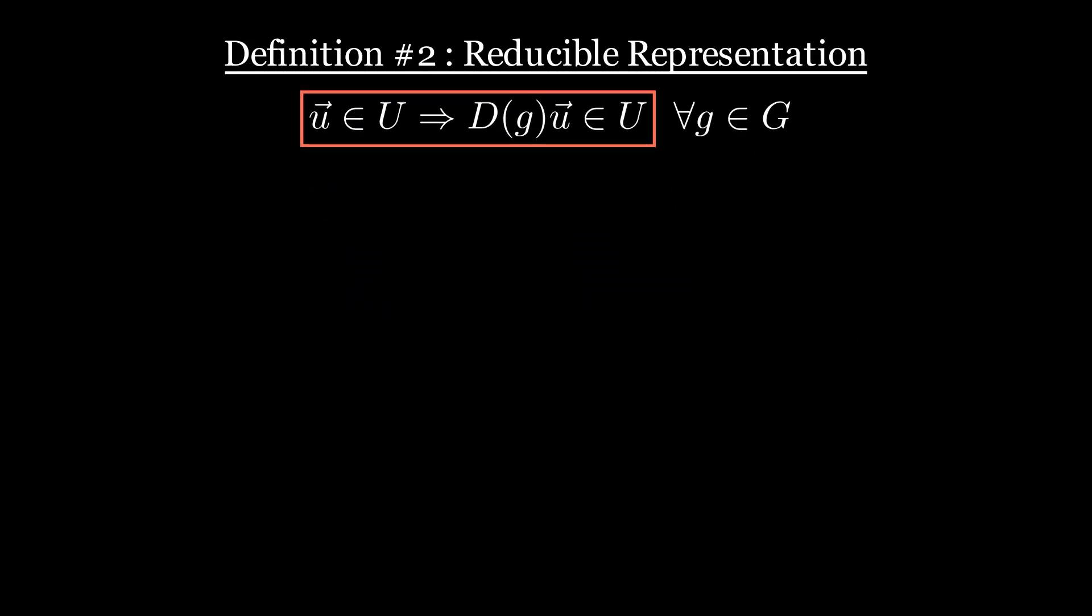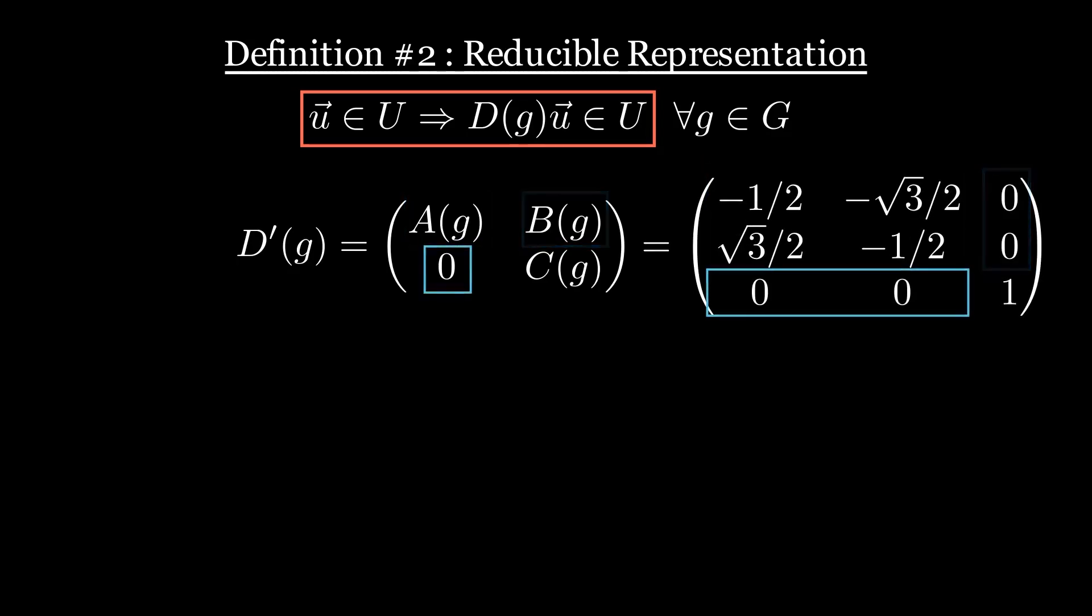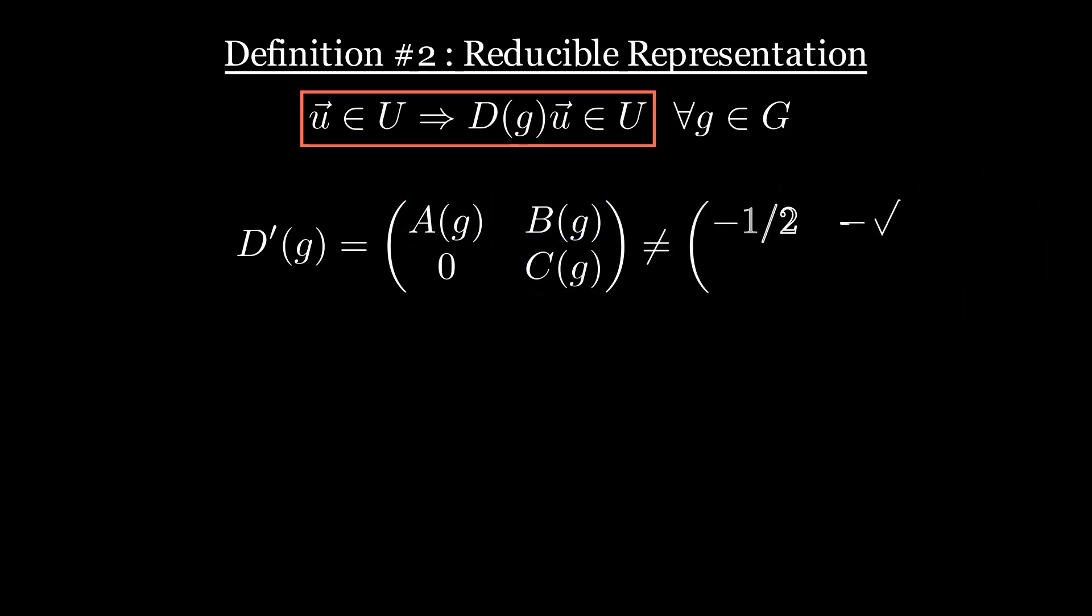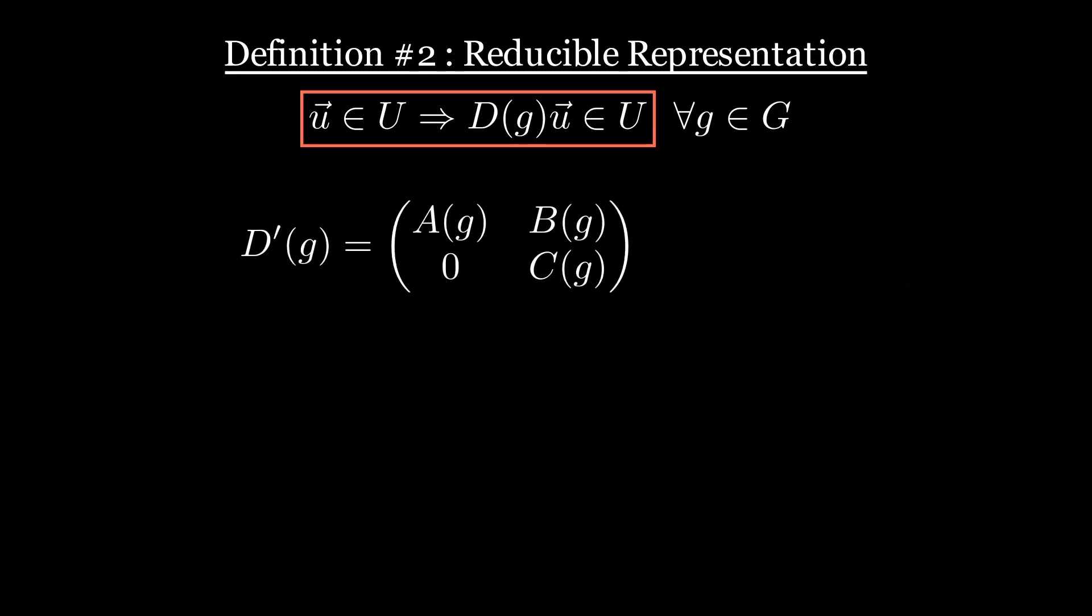If you are not familiar with these notions of invariant subspace, and prefer to visualize things, there is an equivalent definition which is that a representation is said to be reducible, for example, if in some basis, the matrices can be cut in four blocks, where one off-diagonal block is zero. For example, this matrix would be in the desired form, but this matrix wouldn't. As I said, this form must be found in some basis, so the choice of the basis is really important.